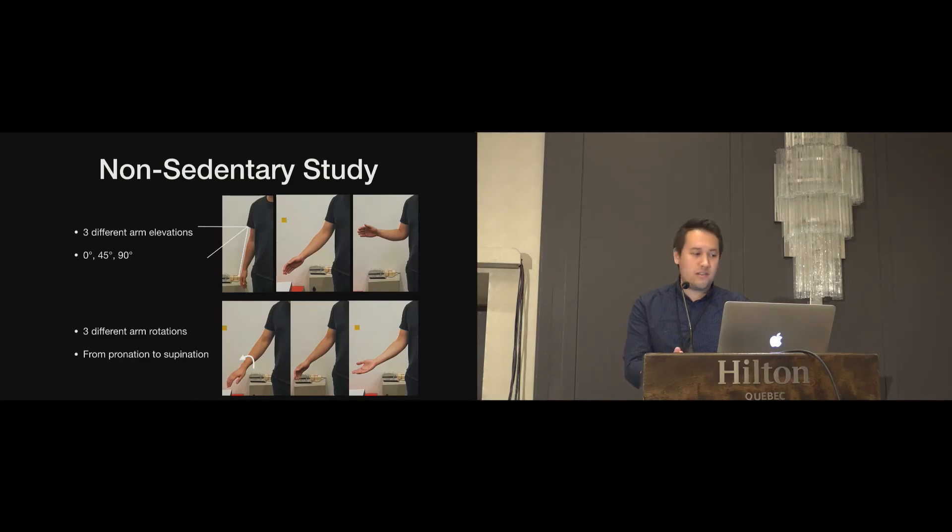The second study we tried was a non-sedentary study. During the main study, the users were sitting down in a fixed position and instructed to keep their arms still. But people are likely to be moving around and moving their arms in different positions when in real use. So we tested the system with three different arm elevations and three different arm rotations. We found that the accuracy still remains quite good in both cases. But as expected, the rotational changes to the forearm makes classification more difficult.